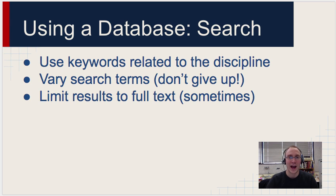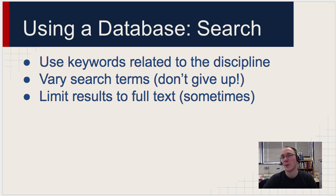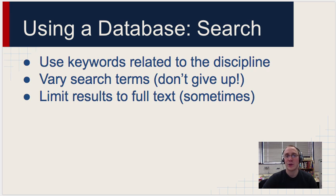So let's talk about how we search in research databases. First of all, you need to use keywords related to the discipline that you are researching. If I'm researching SOPA, the Stop Online Piracy Act, for example, I need to know lots of keywords and important definitions related to SOPA so that I can search intelligently. We also need to make sure and vary our search terms. If the first time you search for something you really don't get any good results, don't give up — vary the terms that you're using.